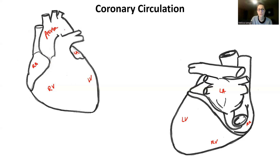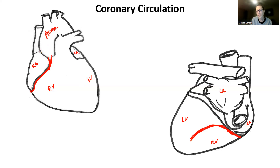Blood is going to flow into the aorta from the left ventricle, and when it does, it's going to come out of arteries coming right off of the aorta. Coming right off of the aorta, we're going to see an artery that goes underneath the right atrium — between the right atrium and the right ventricle — and it's going to wrap posterior, coming all the way posterior like this, and it's going to become another blood vessel going between the right ventricle and the left ventricle in the posterior interventricular sulcus. This artery is called the right coronary artery.